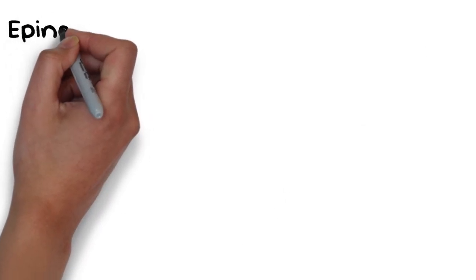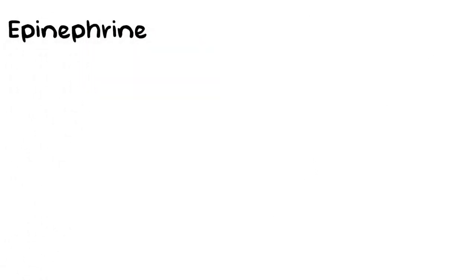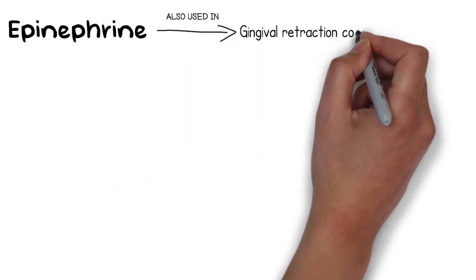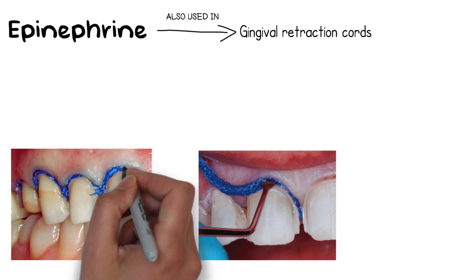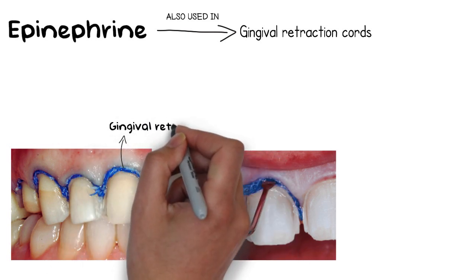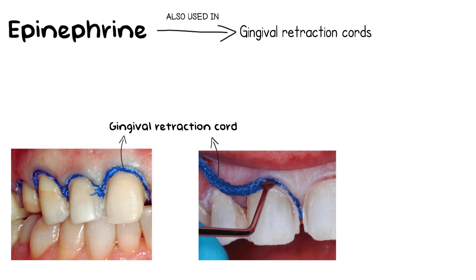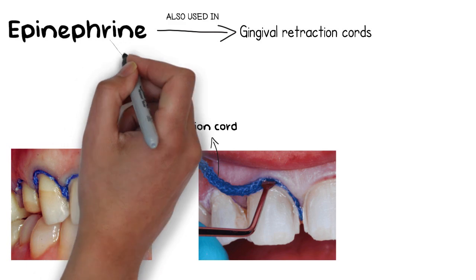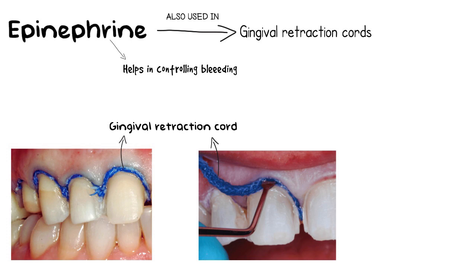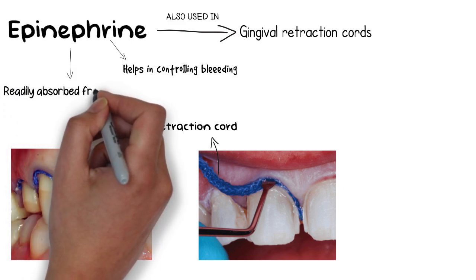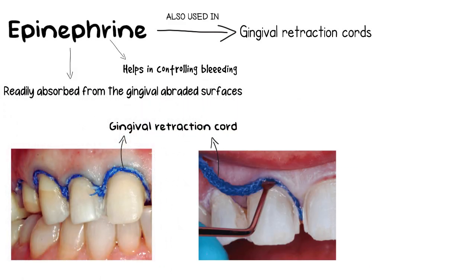However, vasoconstrictors are also used in the gingival retraction cord. The gingival retraction cord is used before impressions are taken for crown and bridge procedures in order to retract the gingiva and allow for a better record of tooth margins. The reason for the use of vasoconstrictor in the gingival retraction cord is to control bleeding on the gingival margins. Epinephrine overdose is more common when used in gingival retraction cords, because epinephrine is readily absorbed through gingival epithelium that has been abraded during dental procedures like crown preparations.